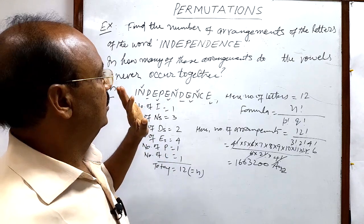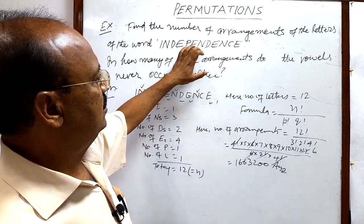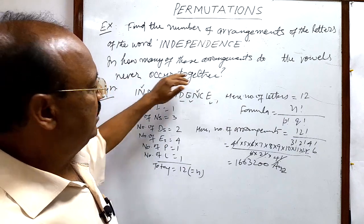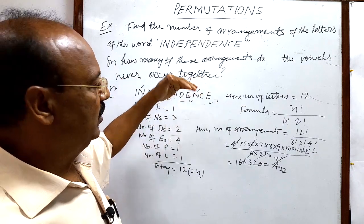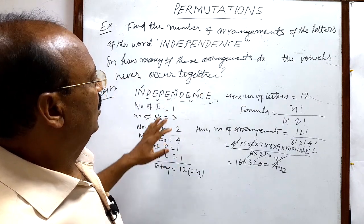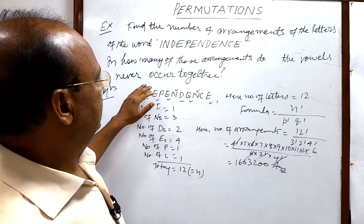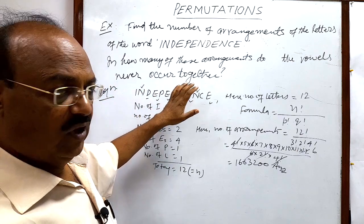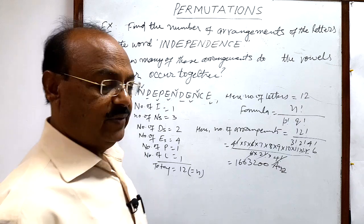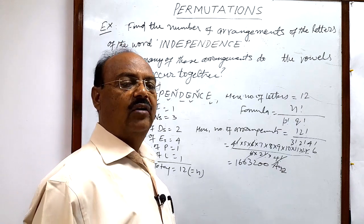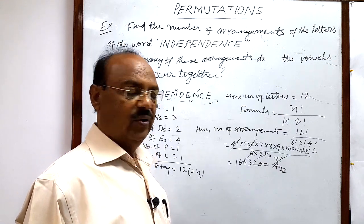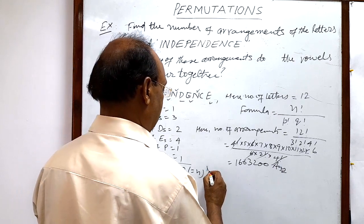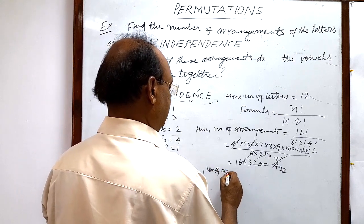The total number of arrangements of the letters of the word INDEPENDENCE is 16,63,200. That is the solution to the first part. Now, for the second part: we need to find the arrangements in which the vowels never occur together. To use the complement method, we first find arrangements when vowels DO occur together.